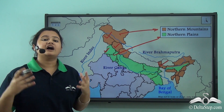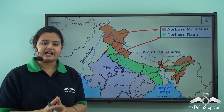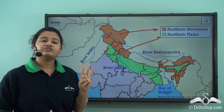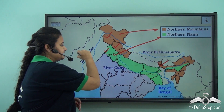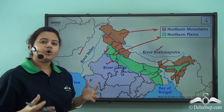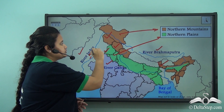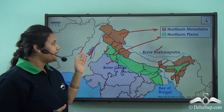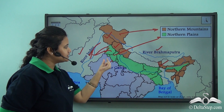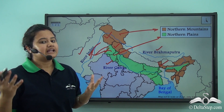The Northern Plains are a vast region of extensive flat, fertile lands, and the region is drained by three major rivers: namely Indus, Ganga, and Brahmaputra. Although River Indus does not flow through the Northern Plains directly, some of its tributaries flow through this part of the Northern Plains, and we will discuss about this later on.